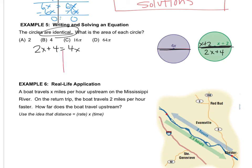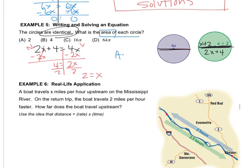Drop a line down the equal sign. Let's do numbers on the left, variables on the right. Here's the trick: if you picked choice A, you fell into a trap answer, because the question doesn't say what is x — it says what is the area of the circle. So the area equals pi r squared. The radius right here is x plus 2, and when you solve you get the radius is 4. So pi times 4 squared gives pi times 16, and that's choice C.